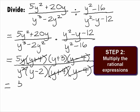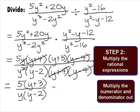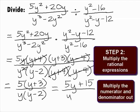This will leave us with 5 times y plus 3 all over y times y minus 2. When we multiply this out, we get our final answer of 5y plus 15 over y squared minus 2y.